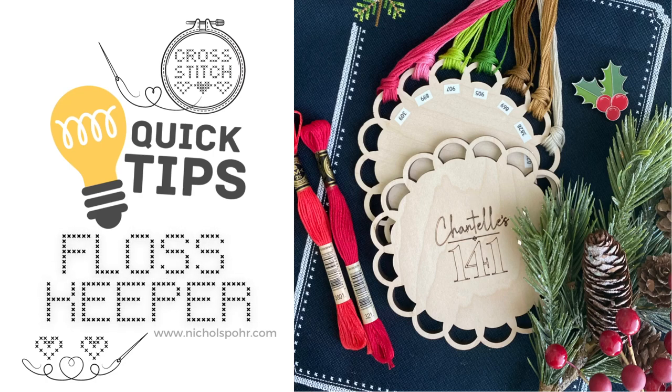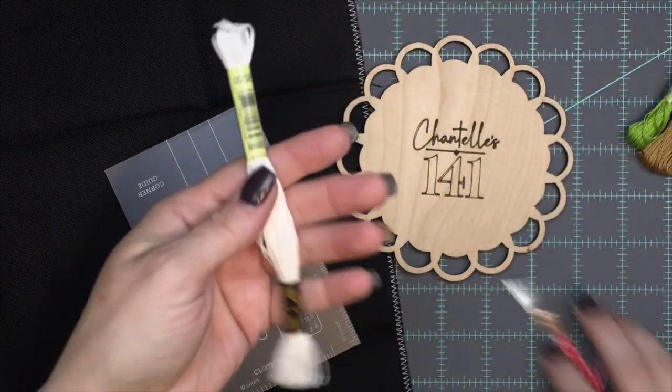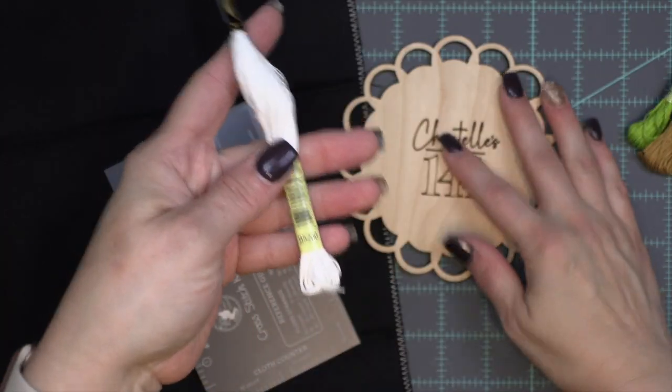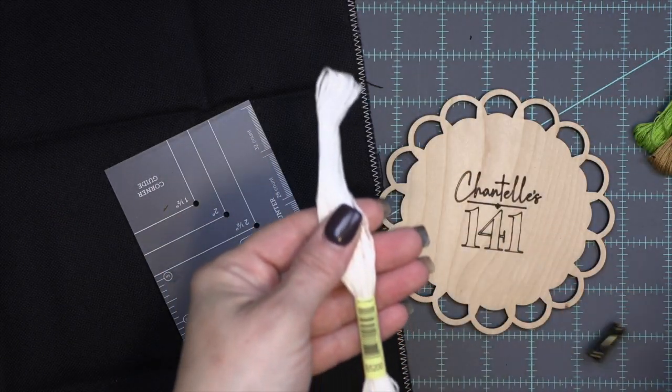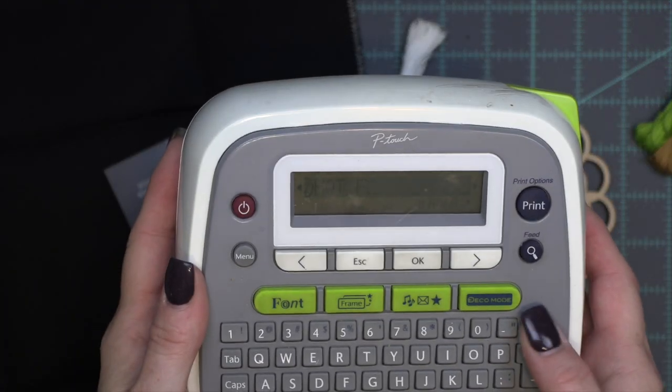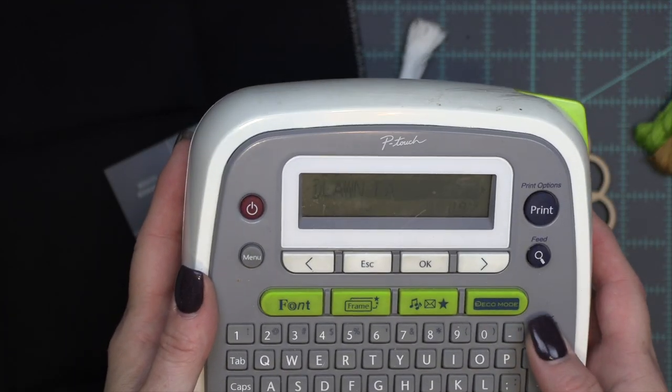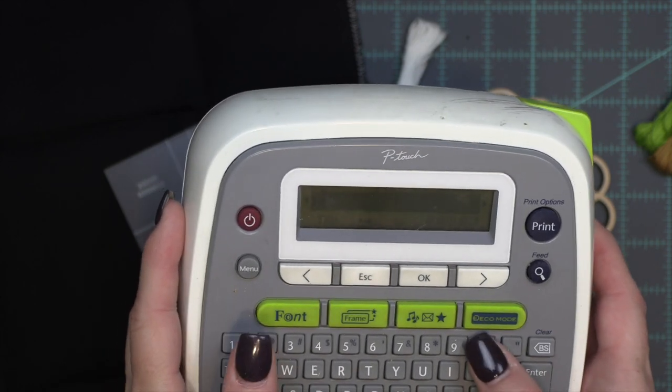Hi everyone, it's Nicole. Welcome back to my Flosstube channel. This is a quick tips floss keeper video. I had some questions on how I put my floss on the floss keeper and I had filmed this weeks ago and just never got it up. But I wanted to put it up now because no matter if you're stitching the Old Fashioned SAL or you're stitching something else, the process is the same.